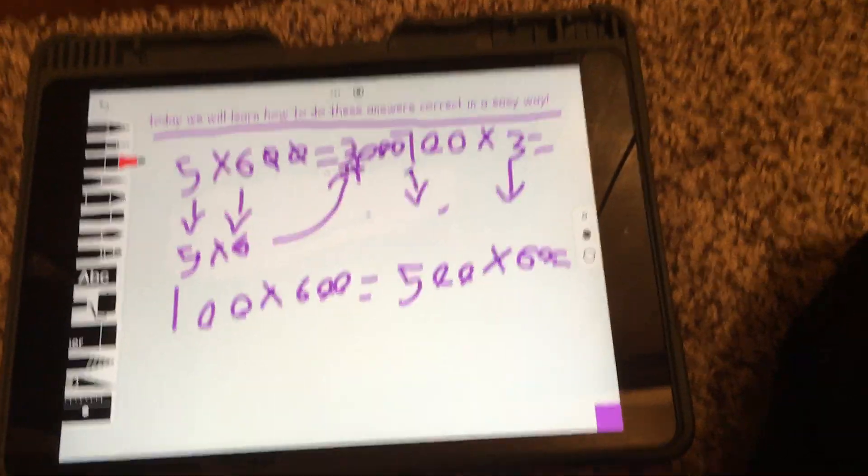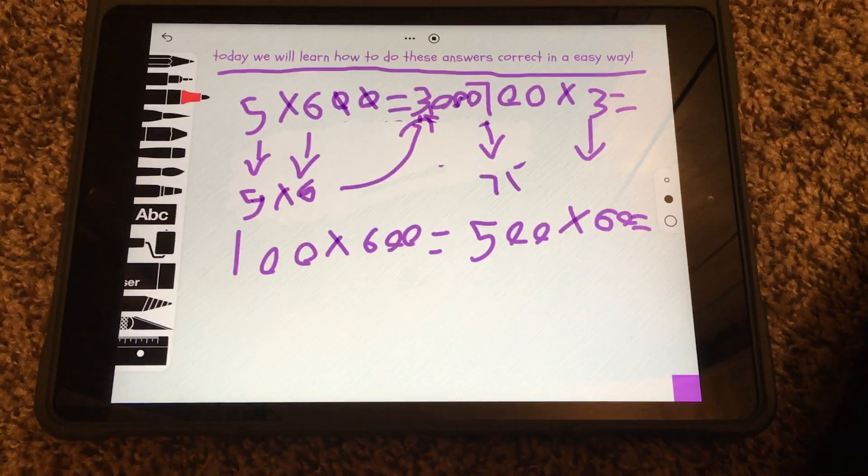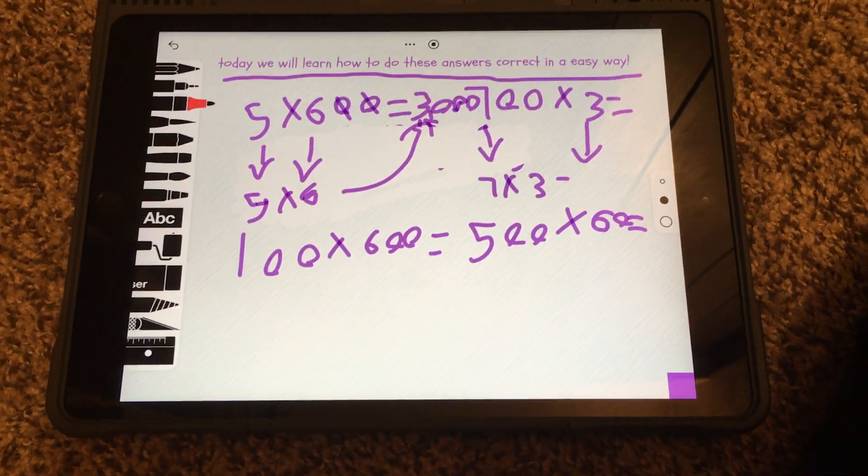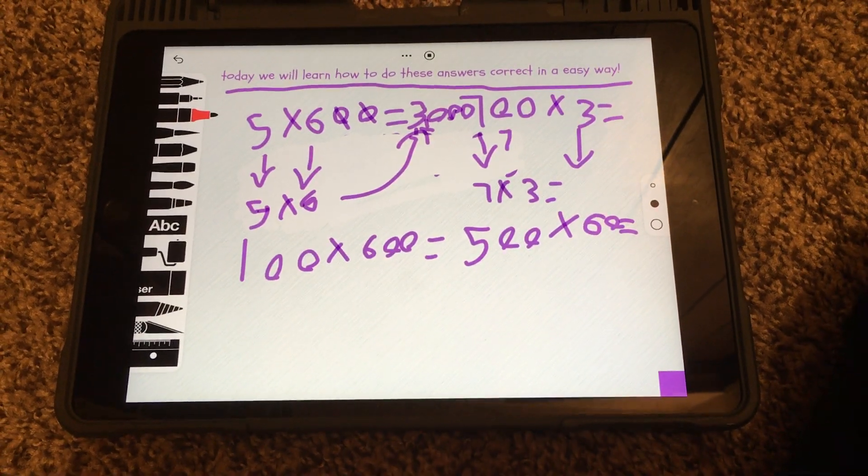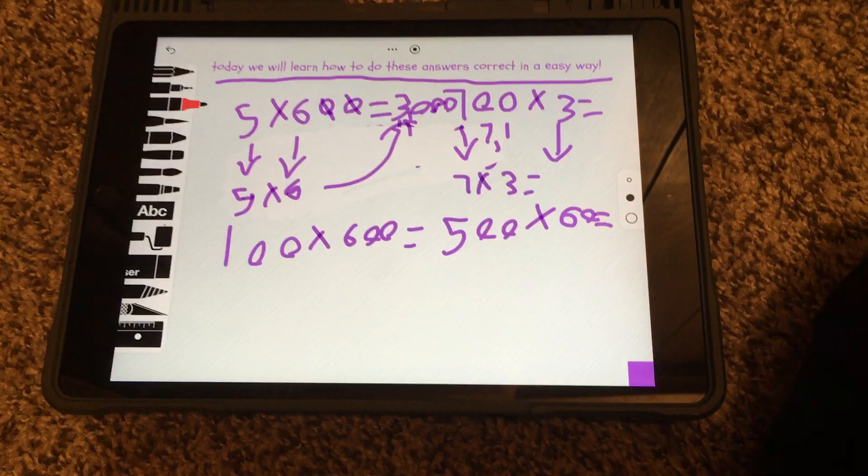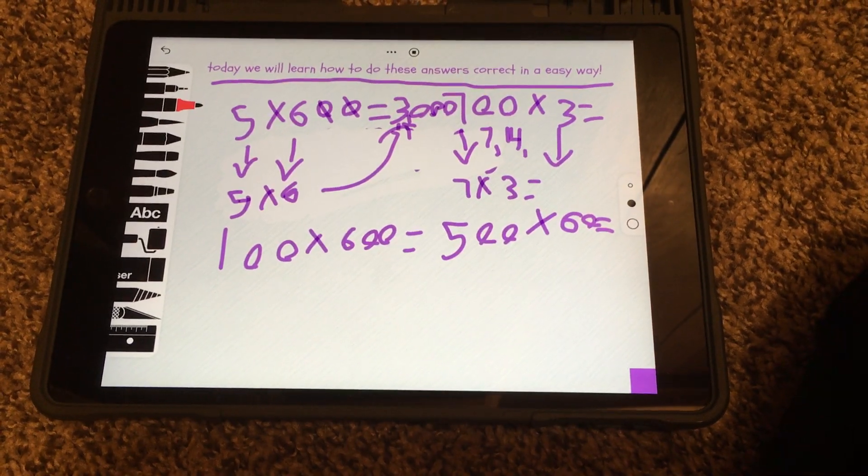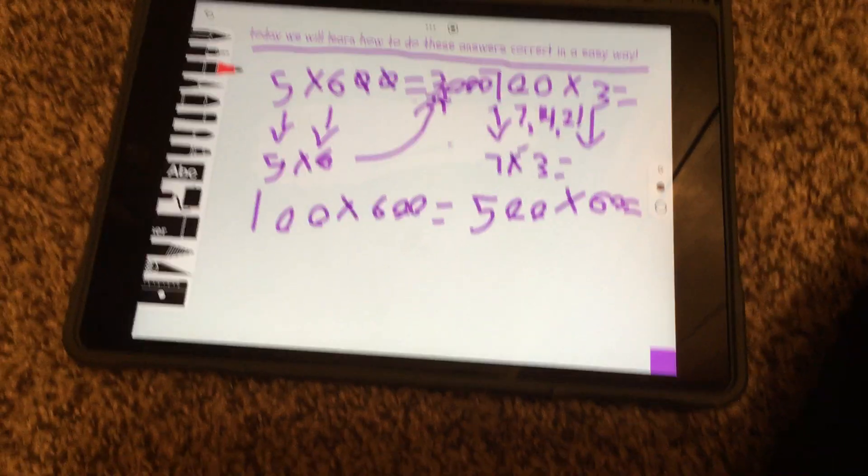So now 7 times 3. We put the 7 down and the 3 down. Then we do 7 times 3 equals 7, 14, 21. So it equals 21.